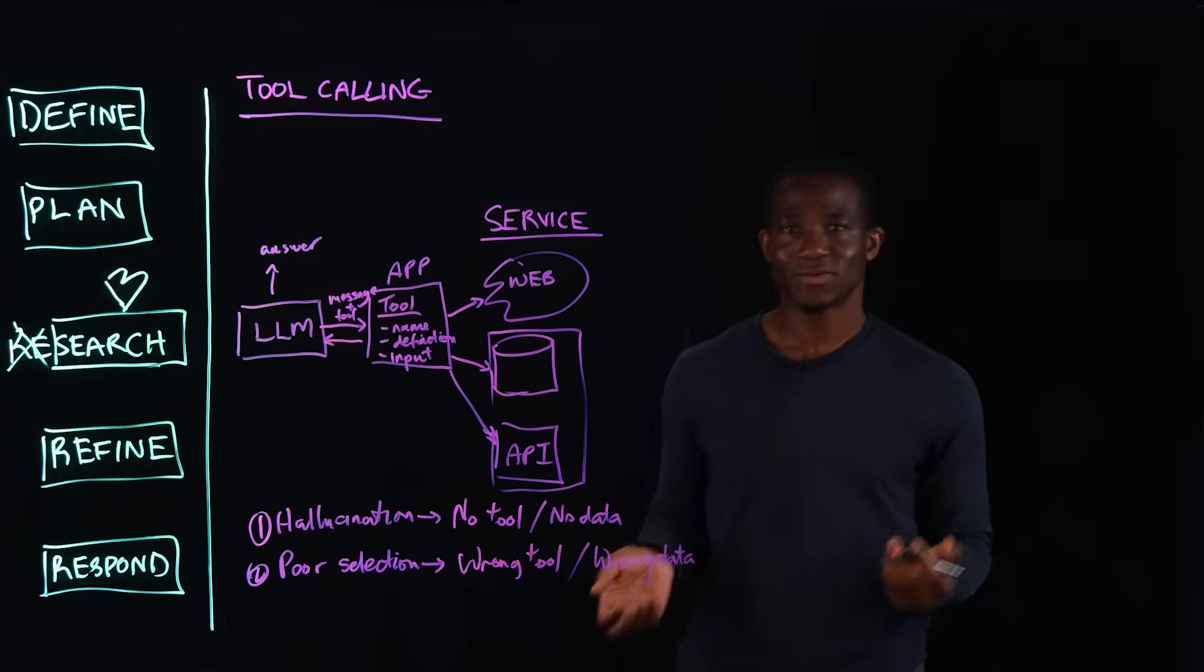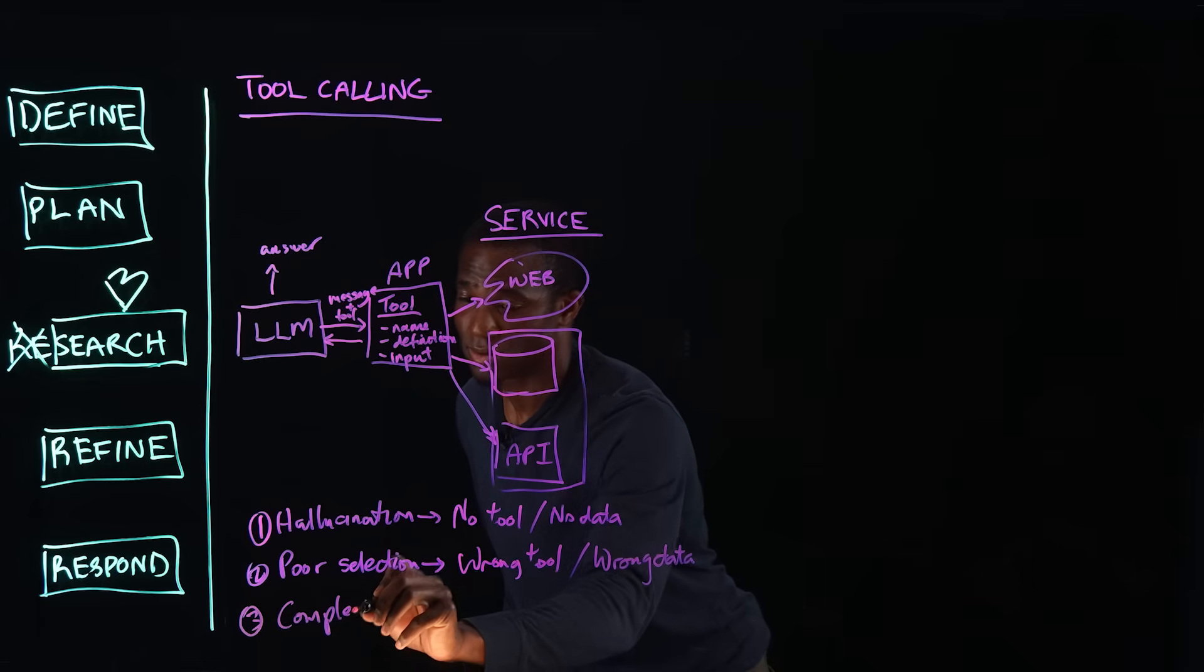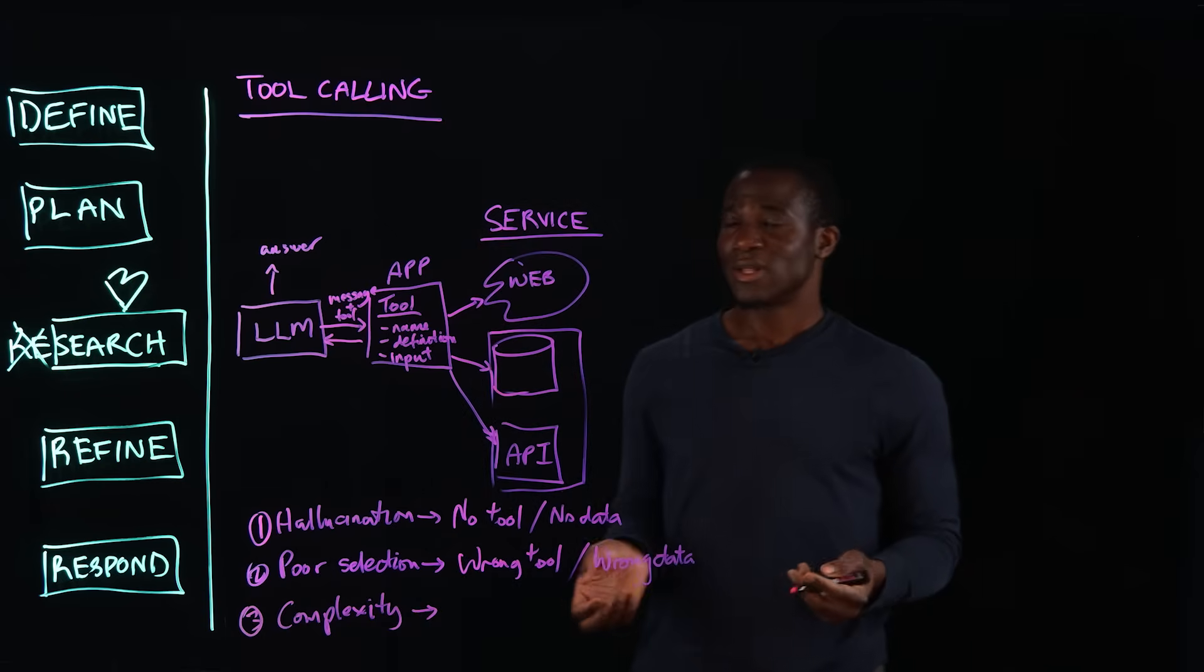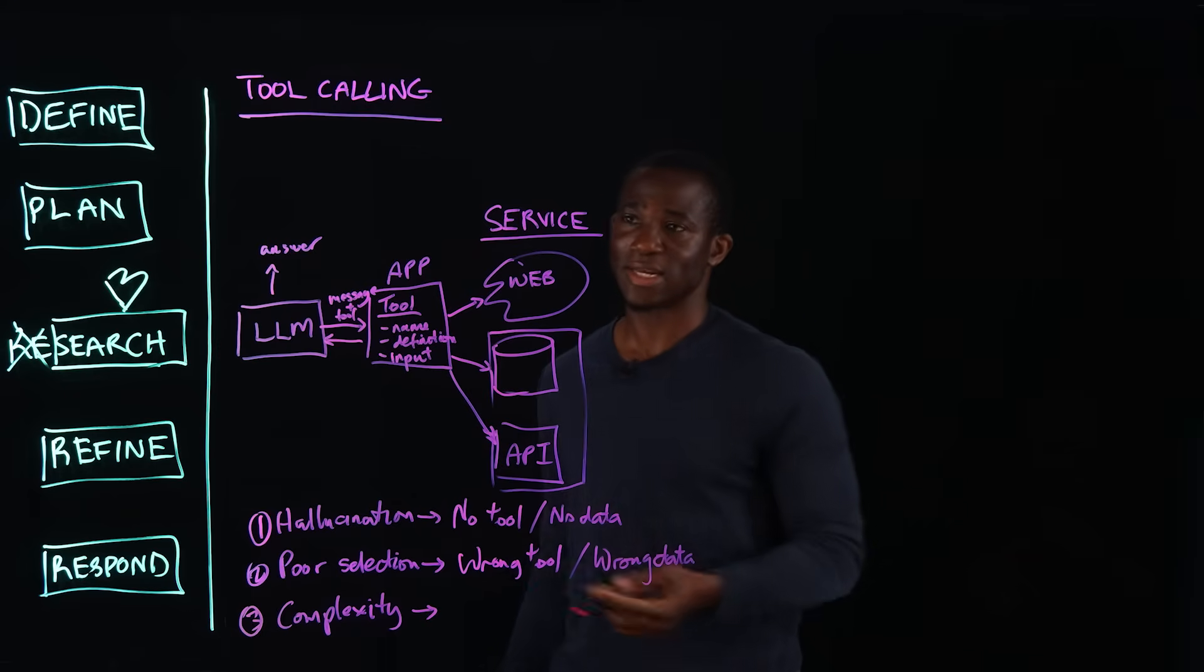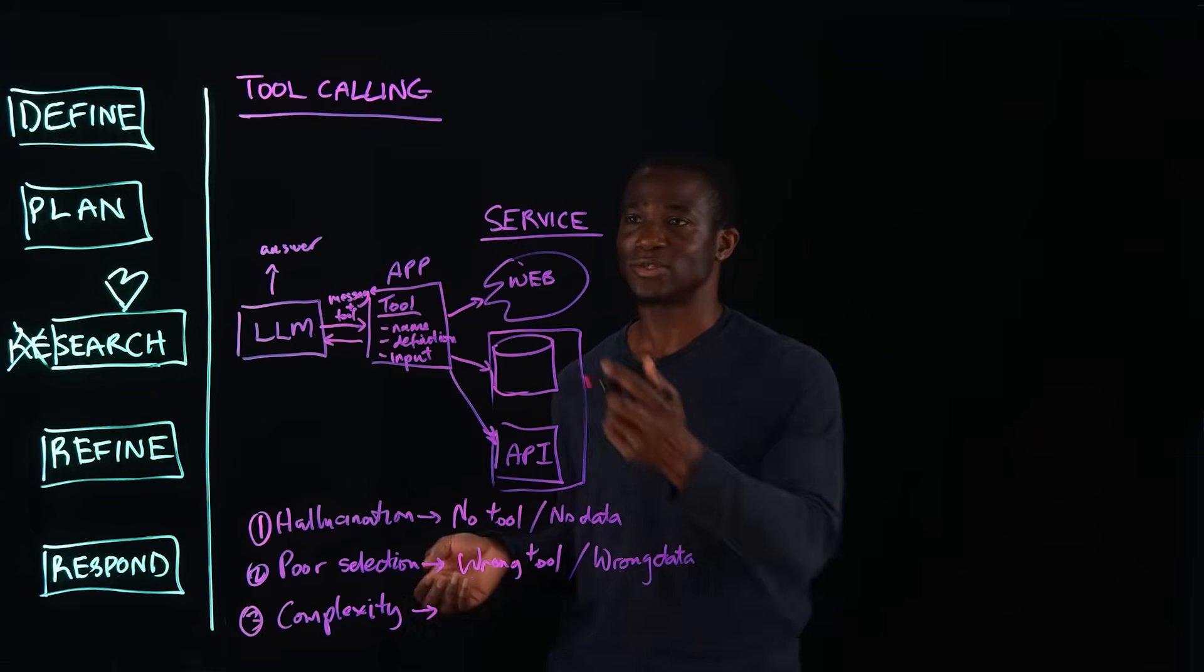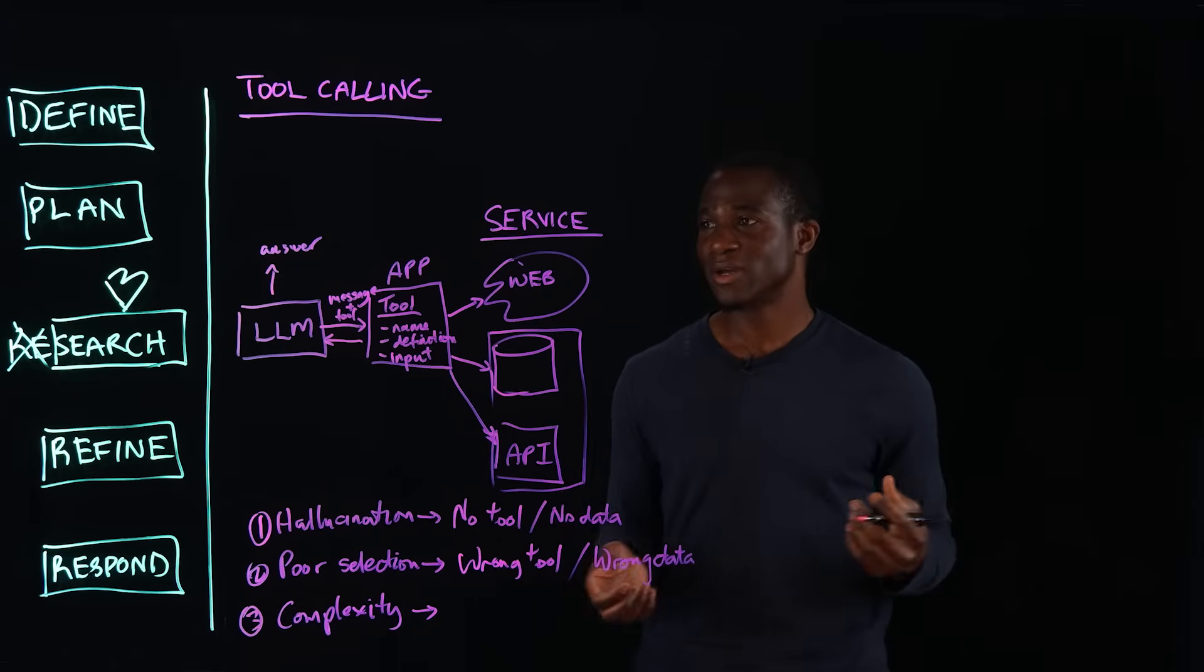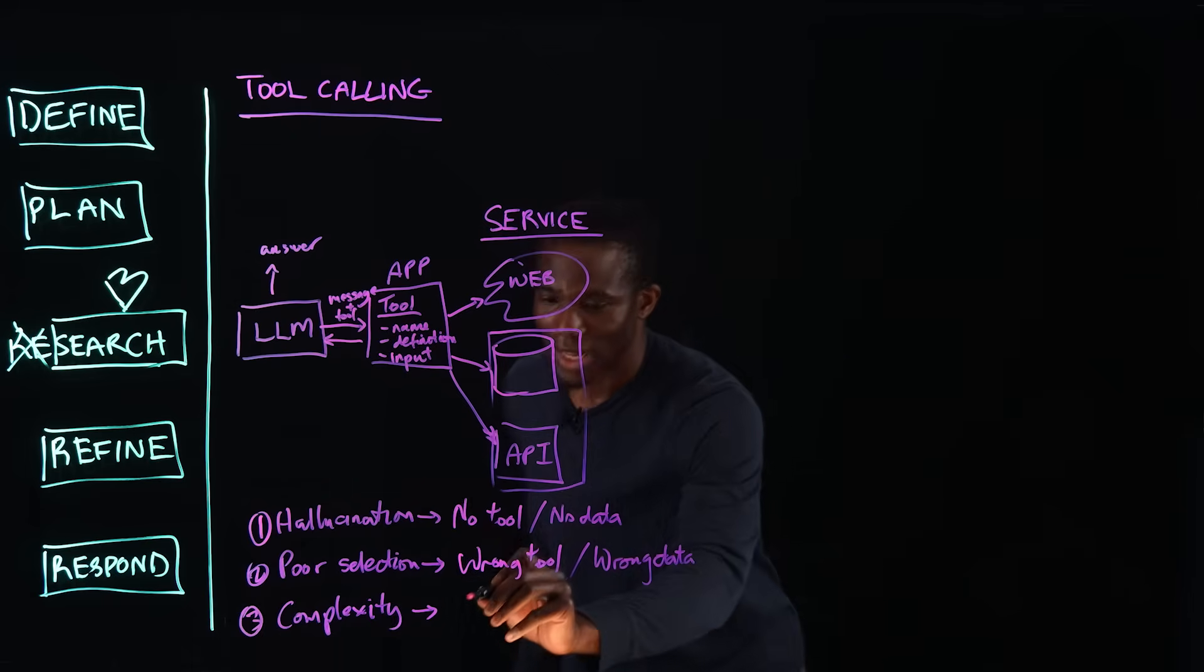And then, one last one that is a drawback for this approach is complexity. What do I mean by that? Well, as a data scientist or developer, you are responsible to define this application. And so, if the service provider changes some of the APIs that are underlying to your tool definition in your application, then it causes the whole application to break, therefore causing your research agent to break. And so, the complexity is around app maintenance.